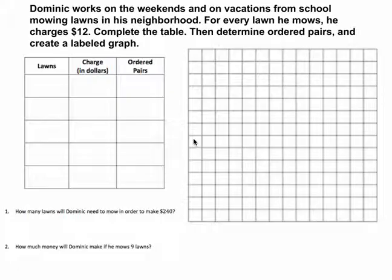Let's start with reading this problem and then setting up a ratio table. Dominic works on the weekends and on vacations from school mowing lawns in his neighborhood. For every lawn he mows, he charges $12. Complete the table, then determine ordered pairs and create a labeled graph.